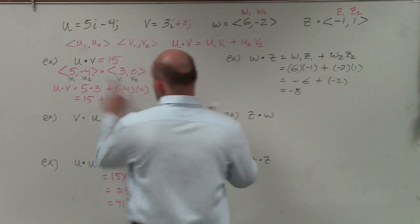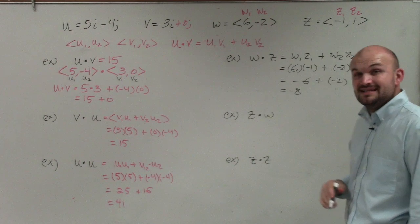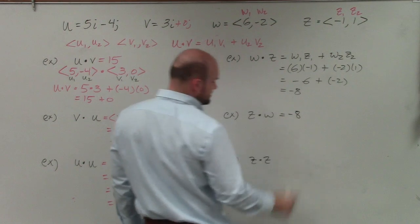If you remember from our last idea here, u dot v is the same as v dot u, so guess what? z dot w is the same as w dot z, so therefore I know that answer is going to be negative 8.